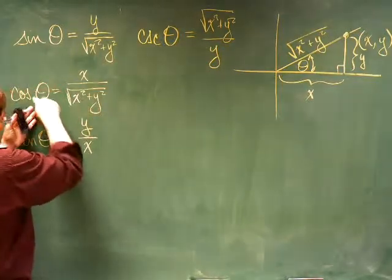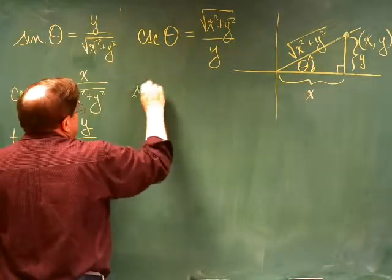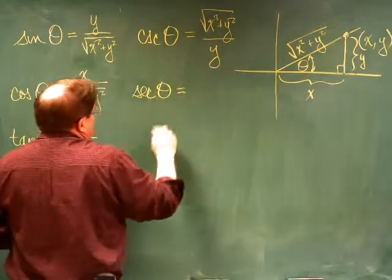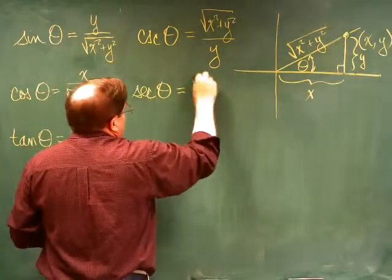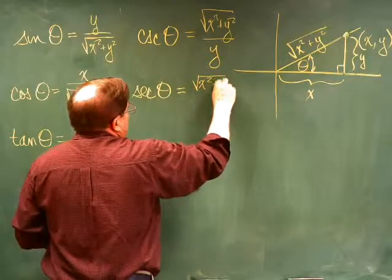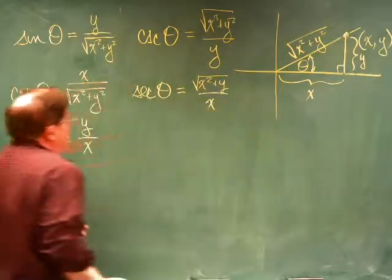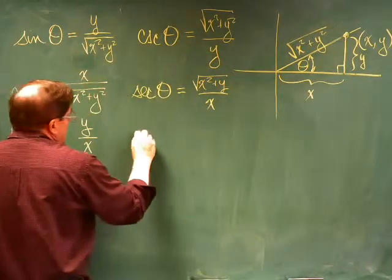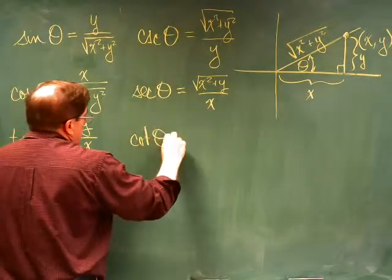The reciprocal of the cosine is the secant of the angle, and that's going to be the hypotenuse over the x value. And the reciprocal of the tangent is the cotangent.